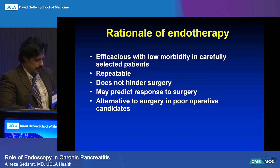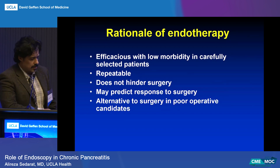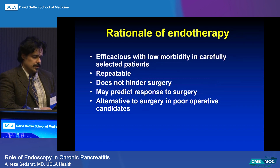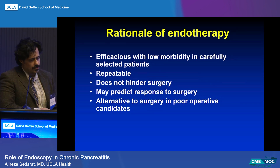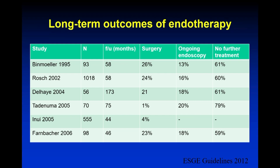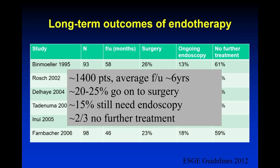The rationale for endotherapy versus surgery is that it's efficacious with low morbidity in carefully selected patients. It's repeatable, should it need to be. It doesn't get in the way of surgery and may predict response to surgery — if you achieve endoscopic drainage and there's pain control but you don't think there's going to be durability, you can think of surgery. Here's a summary of the world literature: about 1,400 patients, roughly a quarter end up going to surgery, 15% still need endoscopy, and two-thirds don't really need further treatment. These are descriptive series — not randomized trials, just a conglomerate of experience from different centers.